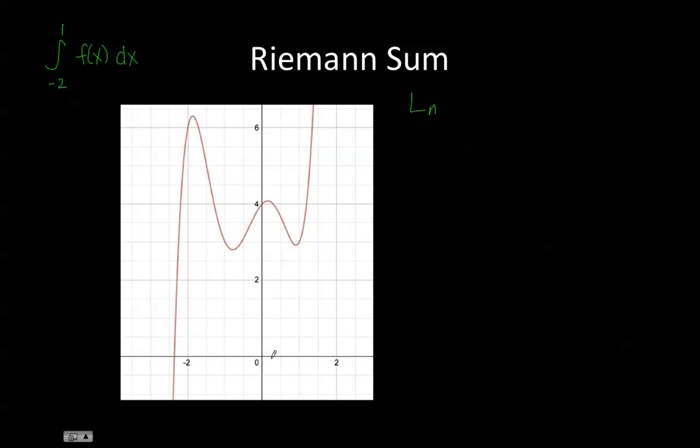So I'm going to divide my definite integral here into three equal increments: negative 2 to negative 1, negative 1 to 0, and 0 to 1. Now that I have my three increments, I'm going to choose my sample points.